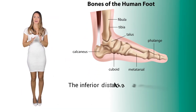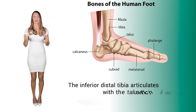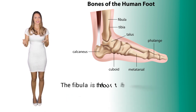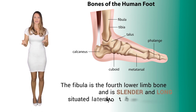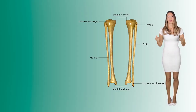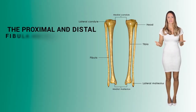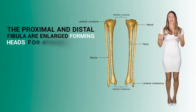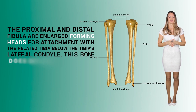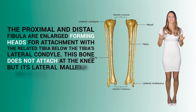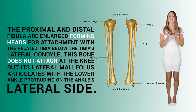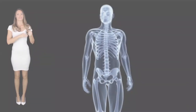Its lateral side has a depression that is a surface for fibula articulation. The inferior distal tibia articulates with the talus, which is a large bone found in the lower ankle. The fibula is the fourth lower limb bone and is slender, long, and situated laterally to the tibia. The proximal and distal fibula are enlarged, forming heads for attachment with the related tibia below the tibia's lateral condyle. This bone does not attach to the knee, but its lateral malleolus articulates with the lower ankle, protruding on the ankle's lateral side.